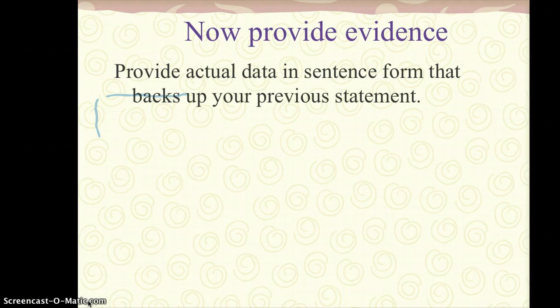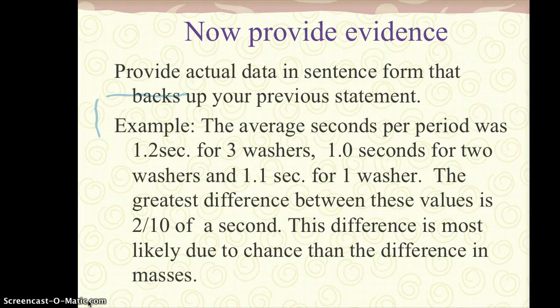Now, to talk to your data is pretty much providing, is looking and seeing what your data actually said. So here's how I want you to do that. When you look at your data, you're going to provide a sentence that backs up your previous statement of accepting or rejecting your hypothesis. For instance, if the average seconds per period was 1.2 for 3 washers, 1.0 for 2 washers, and 1.1 second for 1 washer. When you look at your bar graph that you made for this, remember the trend line that you drew? And it was pretty much a flat line. And a flat line means no slope, which means there's no change in y per unit of x.